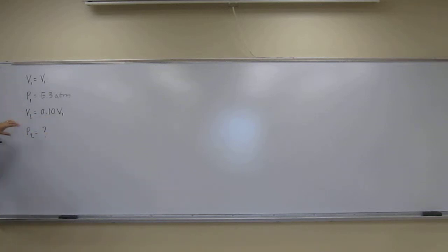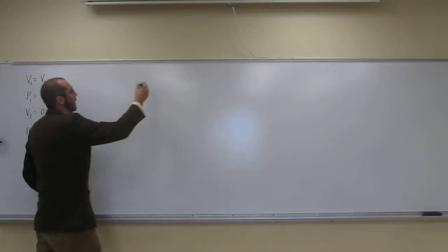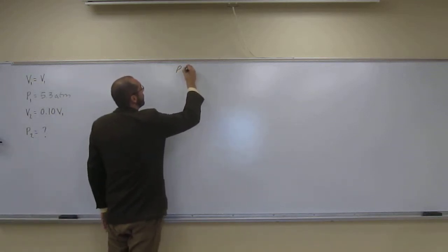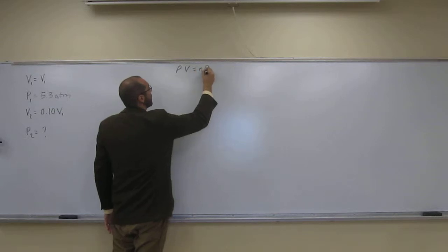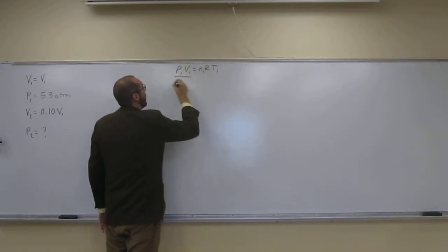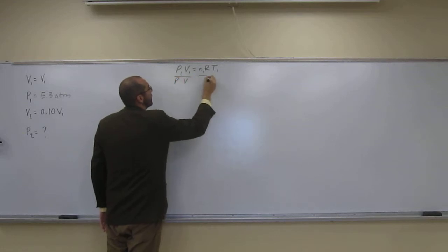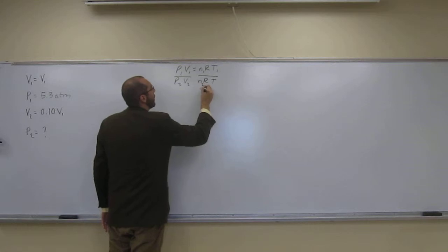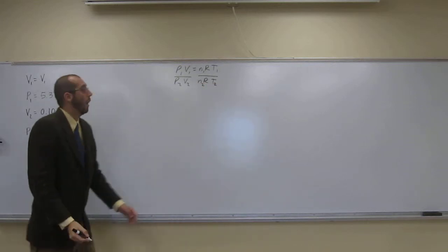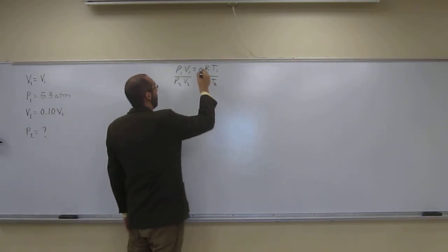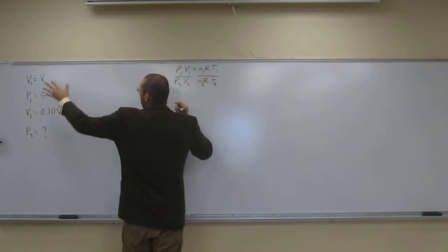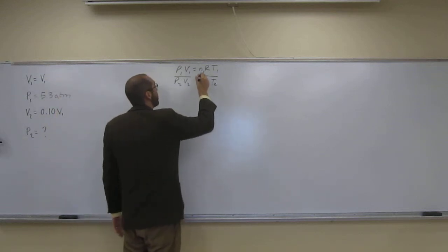Well, you can see volume and pressure are changing. So, what do we say we want to do? PV equals NRT and divide that by PV equals NRT. So, changing for all the variables that are able to be changed.